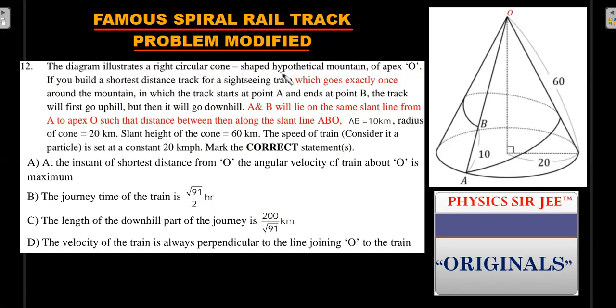The diagram illustrates a right circular cone shaped hypothetical mountain. If you build a shortest distance track for a sightseeing train which goes exactly once around the mountain, the track starts at point A and ends at point B. The track will go first uphill and then downhill. A and B lie on the same slant line from A to apex O, such that the distance AB is 10 kilometers, radius is 20 kilometers, and slant height is 60.